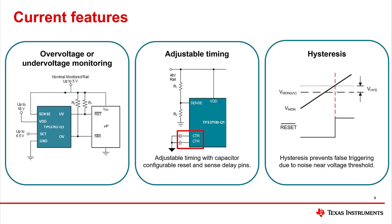Hysteresis has built-in glitch immunity to maintain reset signal integrity by providing a buffer to the voltage threshold so the reset signal does not release prematurely.